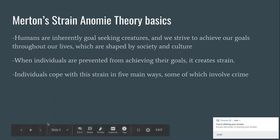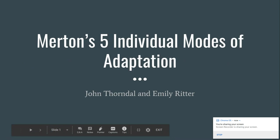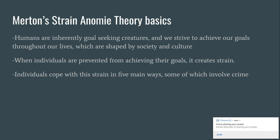This video is about Robert Merton's five individual modes of adaptation and his strain theory. To give context to these five modes, we'll discuss Merton's addition to Emile Durkheim's strain theory. The theory says that humans are inherently goal-seeking creatures. We strive to achieve our goals, and when we're denied legitimate means to achieve them, we're placed under a strain, and we cope with this strain in five different ways.